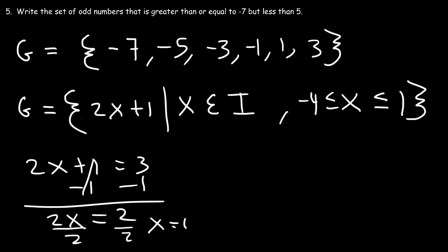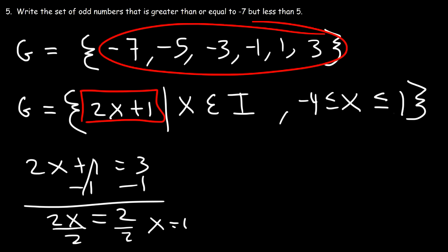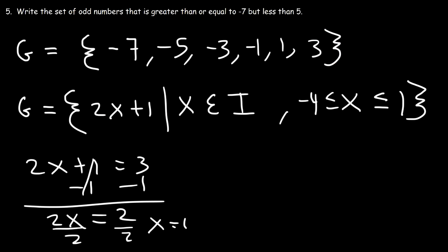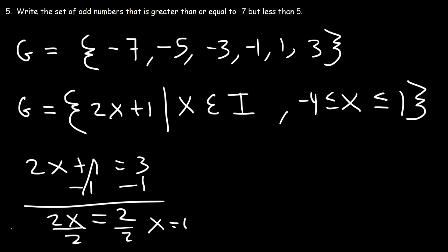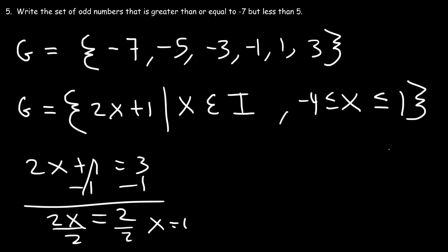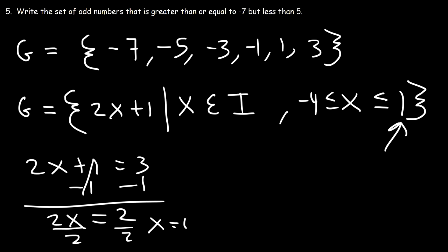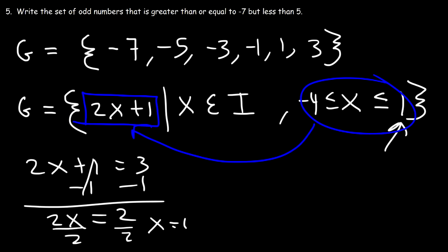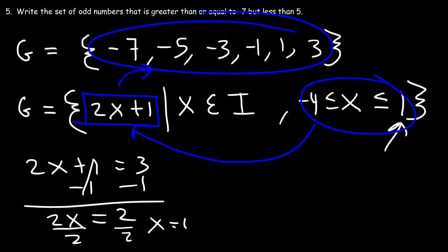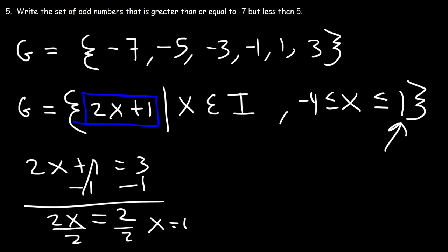This equation describes the set when those X values are plugged into the expression. For example, X equals 0 gives 2 times 0 plus 1 equals 1; X equals negative 1 gives negative 2 plus 1 equals negative 1; X equals positive 1 gives 2 plus 1 equals 3 — the last number. You want to make sure you have the right algebraic expression and the values of X that produce the correct set of numbers. That's it for number 5.